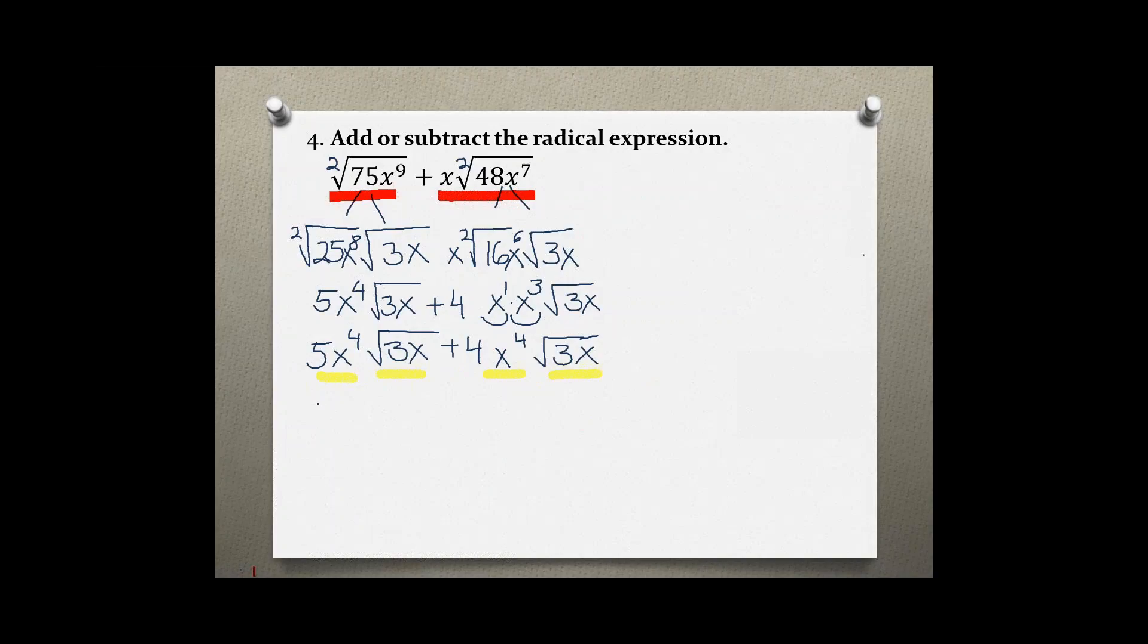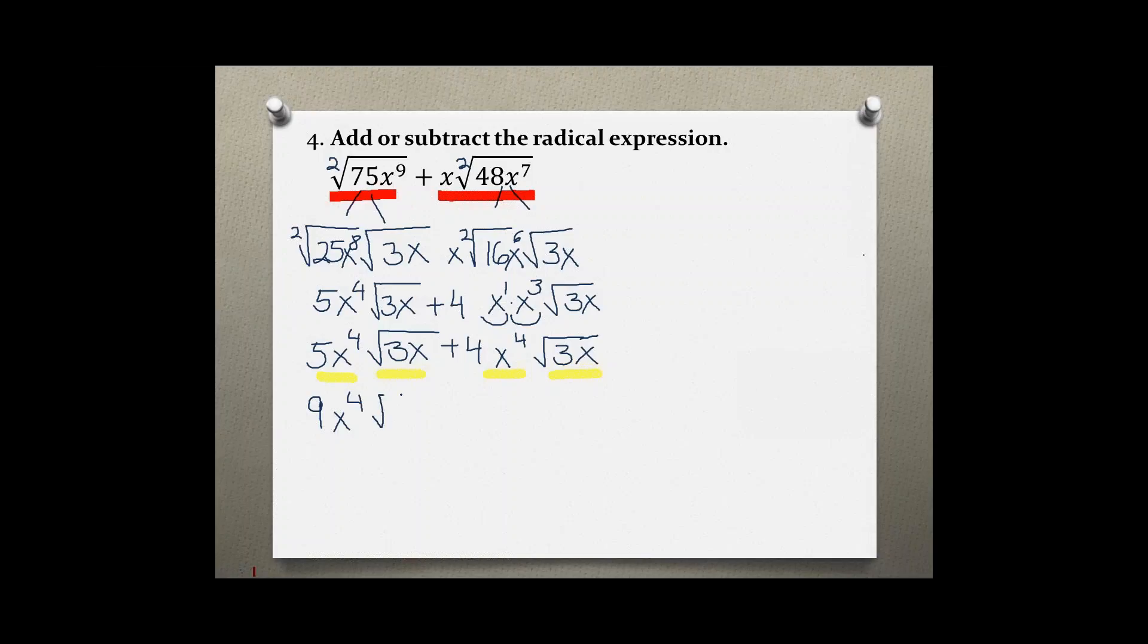5 plus 4 is 9, and x to the 4th with a radical of 3x. As you notice, the x to the 4th and the 3x stay the same.